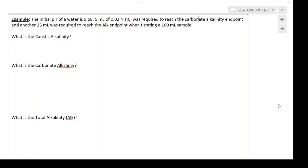doing an acid titration here and we want to calculate the caustic, carbonate, and total alkalinity, and then we'll also calculate the CTCO3. Okay, so to start off with, the caustic alkalinity is actually going to be 0, and that's